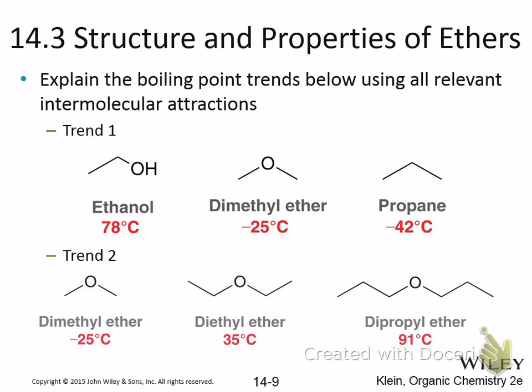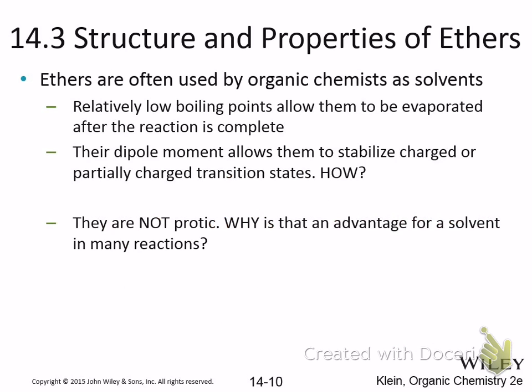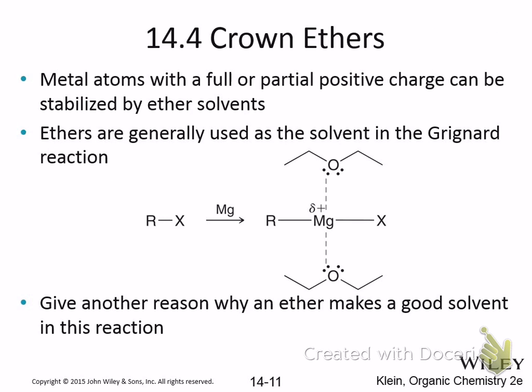The boiling point trend for ethers goes from −25 to 35 to 91°C because of increasing molecular weight and chain length. Ethers also have enough polarity to stabilize charged species in solution. For Grignard reactions specifically, the oxygens help stabilize the positive charge on the magnesium, making the reagent more reactive and soluble. Next time we'll start with crown ethers.